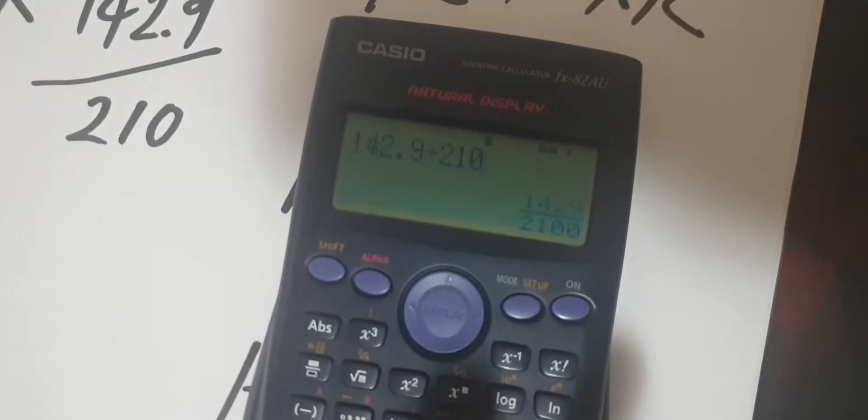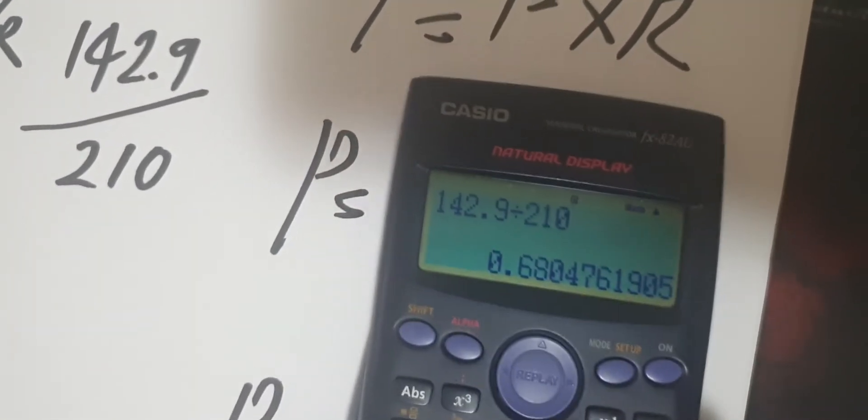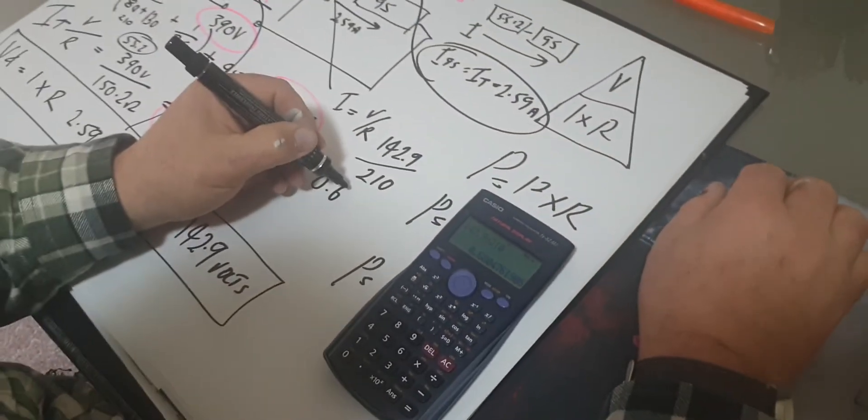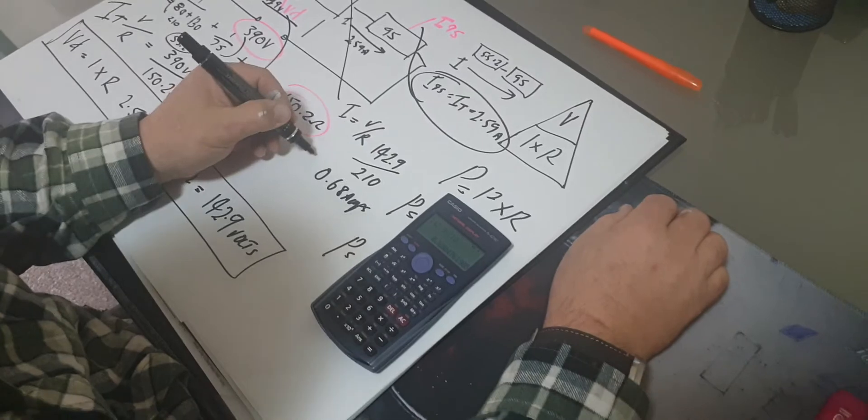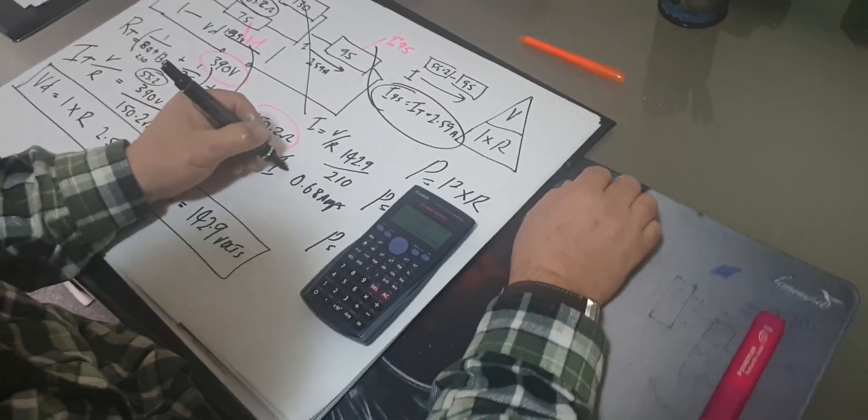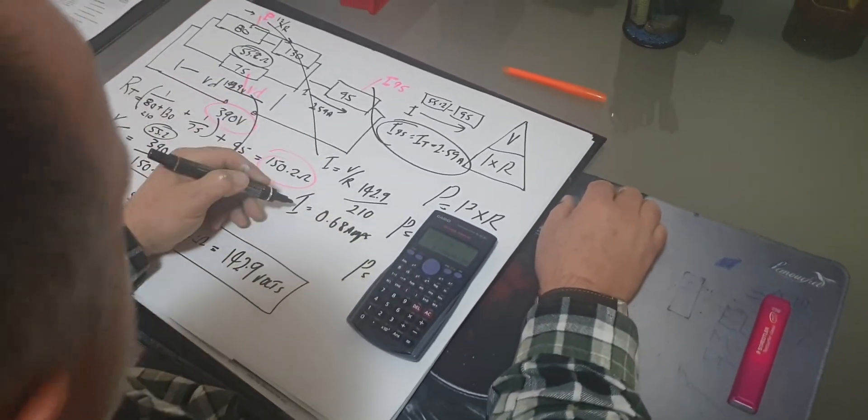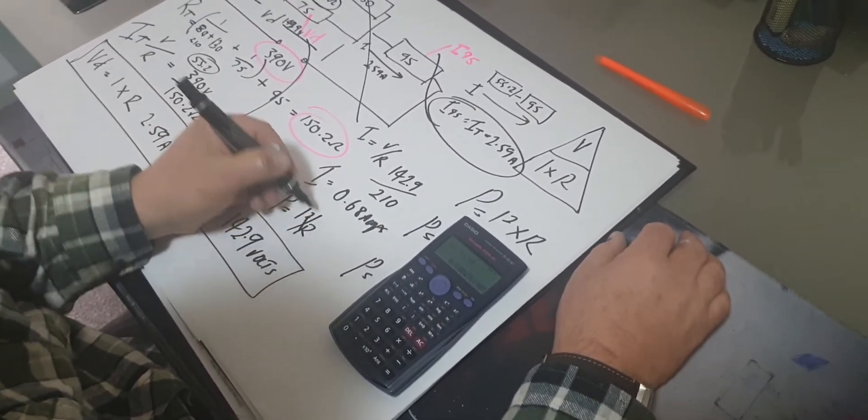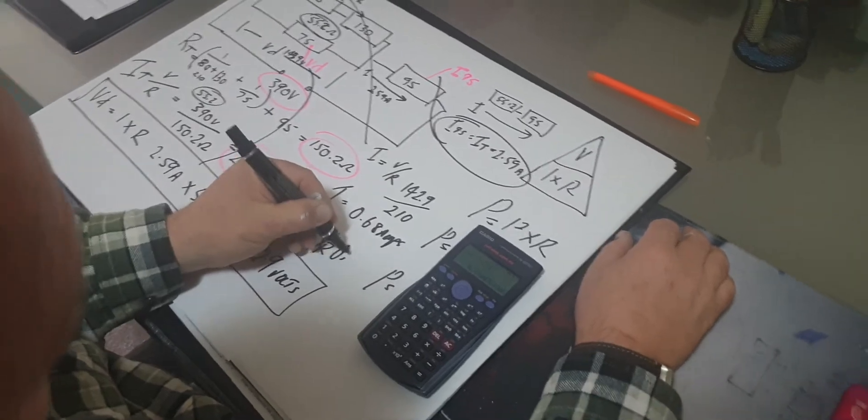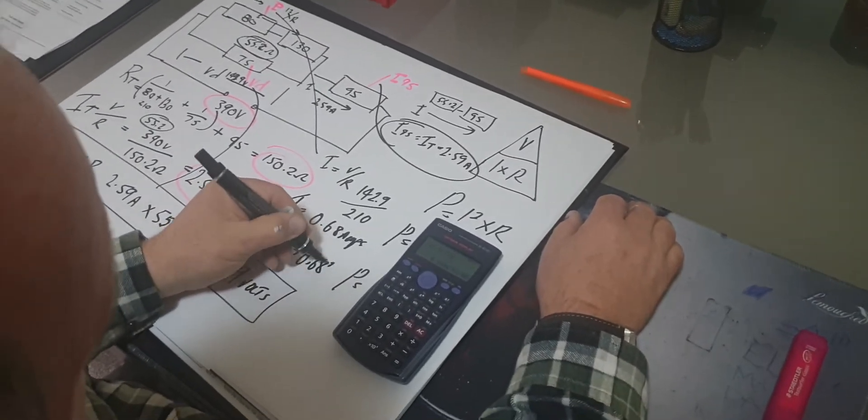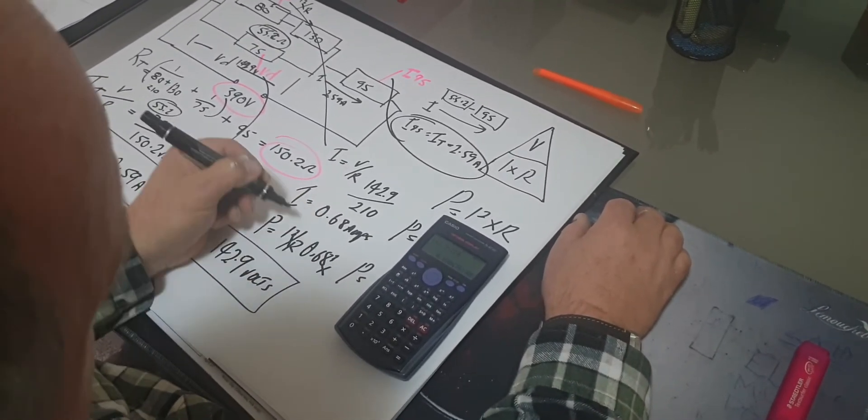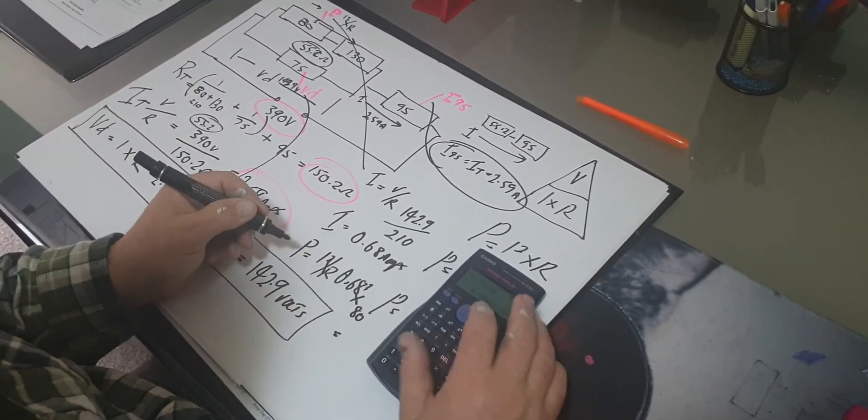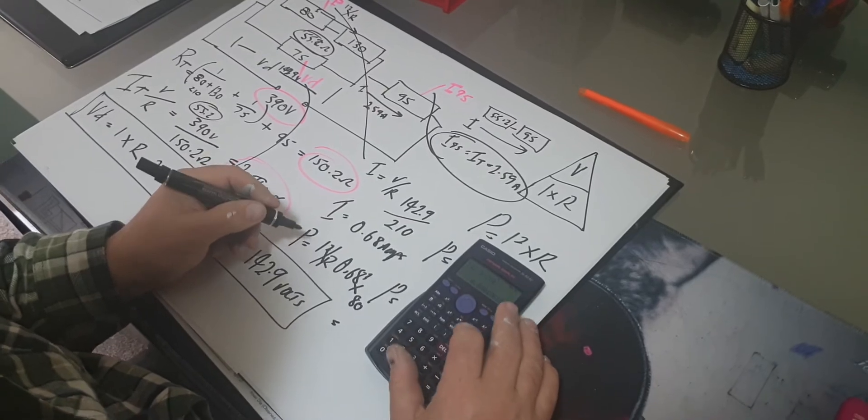All right. Okay, now the next step I need to do is P equals I squared times R. So it's going to be 0.68 squared times the 80. And what do we get? Getting a bit squashed here, but we got that 0.68, so I'm going to square it, which I've done there, times the 80.